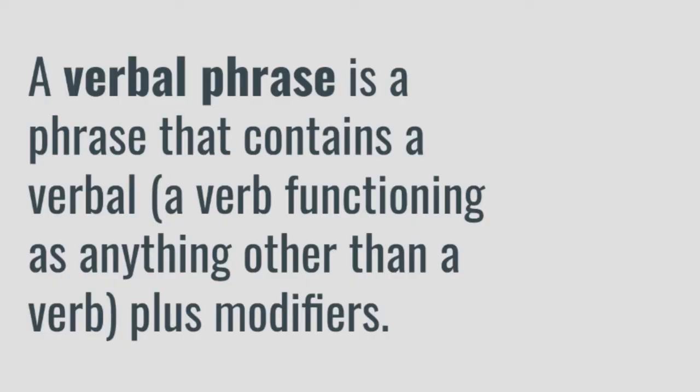So, a verbal phrase is a phrase that contains a verbal — a verb functioning as anything other than a verb — plus modifiers. Let's take a look at a couple more examples before describing the kinds of verbal phrases we may encounter.